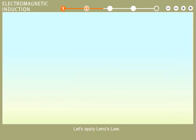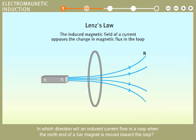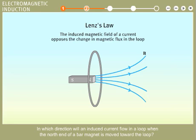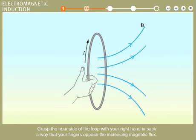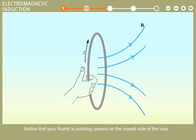Let's apply Lenz's law. In which direction will an induced current flow in a loop when the north end of a bar magnet is moved toward the loop? Grasp the near side of the loop with your right hand in such a way that your fingers oppose the increasing magnetic flux. Notice that your thumb is pointing upward on the closed side of the loop. This is the direction of the induced current.